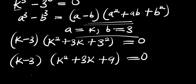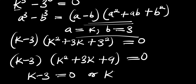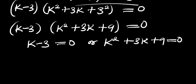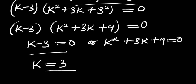Now we are going to have two different solutions. We have k minus 3 equals 0, or k squared plus 3k plus 9 equals 0. From the first one, you can agree with me that k equals 3. So this is a real solution.